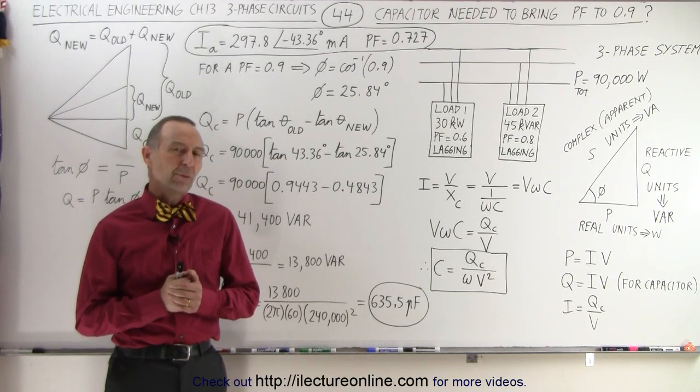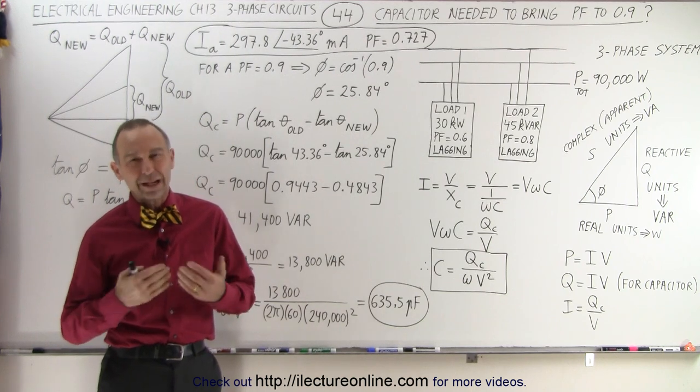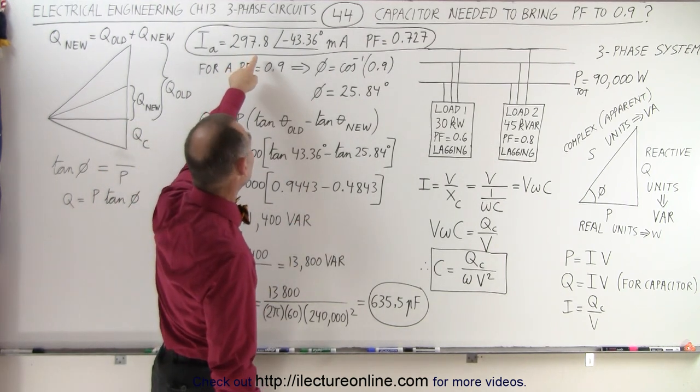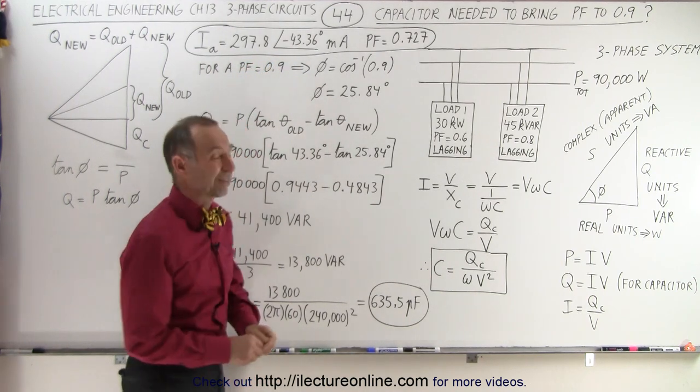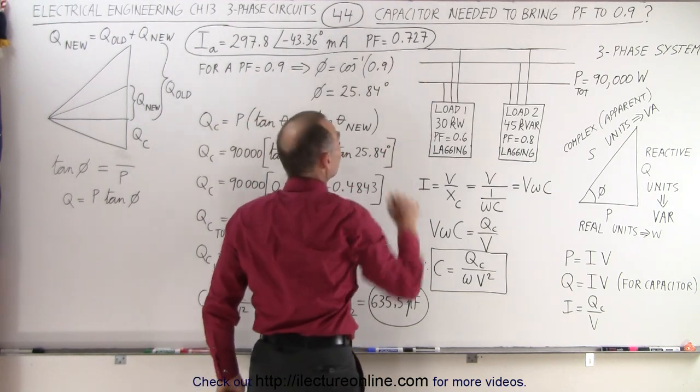Welcome to iLectureOnline. The result that we got for the total current and then the corresponding reactive power was that we had a current of 297.8 milliamps with a phase angle of 43.36 degrees, which gave us a power factor of 0.727.